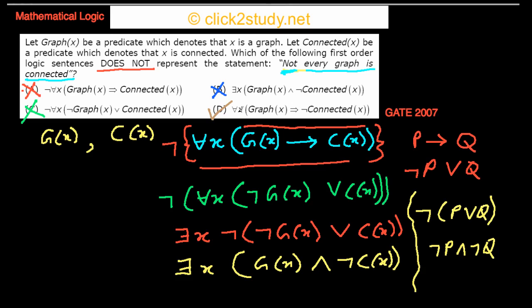The only option left is D, which is the correct answer. Option D says: for all X, G(x) → ¬C(x), meaning every graph is not connected. But that is not the same as 'not every graph is connected.' There exist graphs that are connected. Option D is a stronger, incorrect claim, and therefore does not represent the original statement.